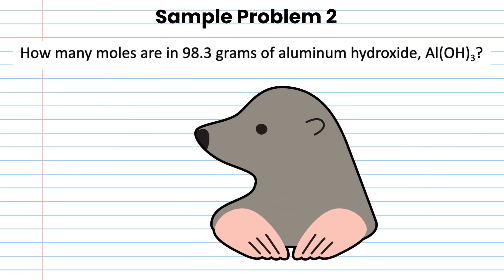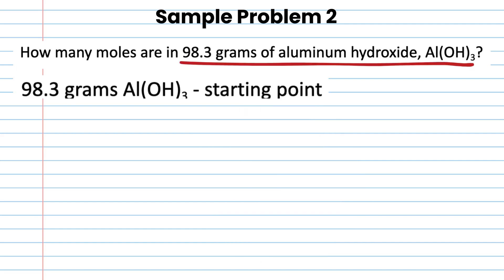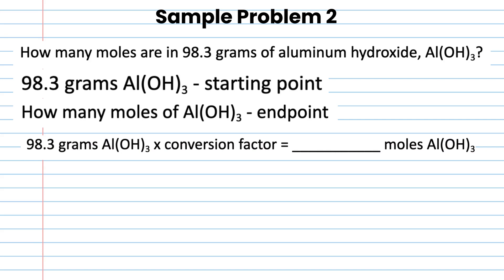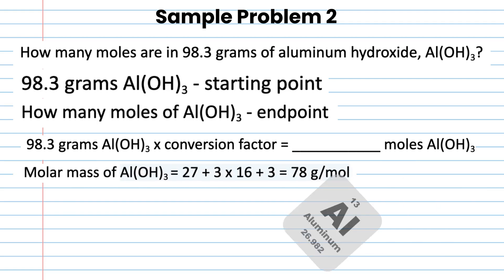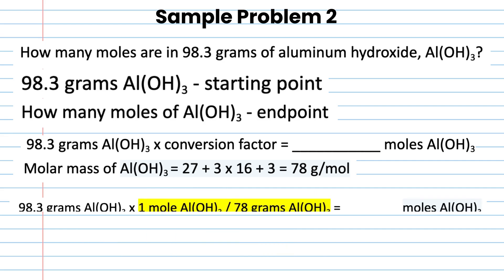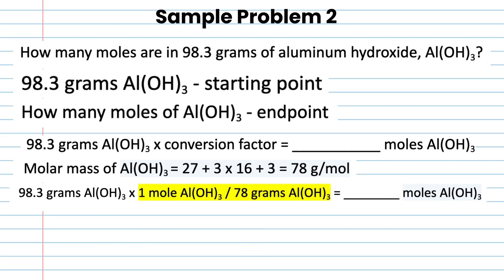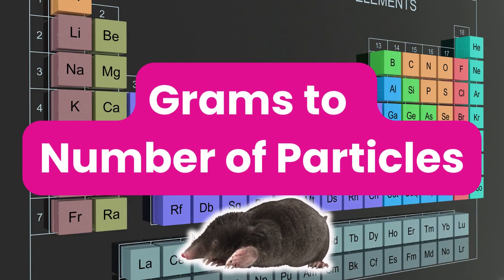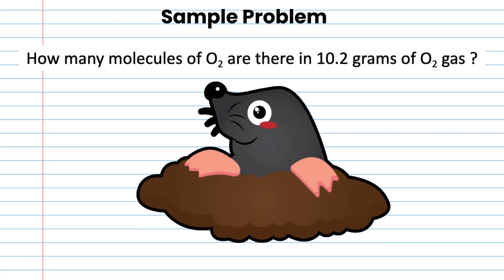Sample problem 2: how many moles are in 98.3 grams of aluminum hydroxide? Starting point is 98.3 grams of aluminum hydroxide. The conversion factor has grams in the denominator and moles in the numerator. The molar mass of aluminum hydroxide equals 27 plus 3 times 16 (three oxygen atoms) plus 3 (three hydrogen atoms), which equals 78 grams per mole. So 98.3 grams times one mole over 78 grams, cross out the grams, equals 1.26 moles of aluminum hydroxide.